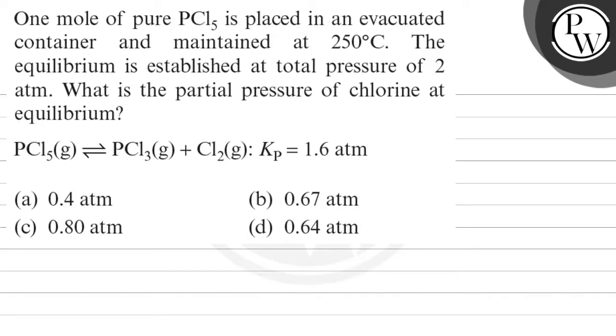Hello, let's see this question. One mole of pure PCl5 is placed in an evacuated container and maintained at 250 degrees Celsius. The equilibrium is established at a total pressure of 2 atmosphere. What is the partial pressure of chlorine at equilibrium? PCl5 gives PCl3 plus Cl2, Kp is equal to 1.6 atmosphere. So you can see PCl5 gives PCl3 plus Cl2.